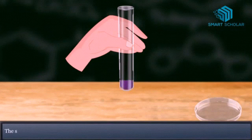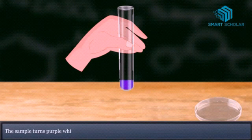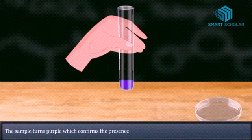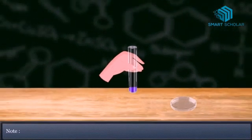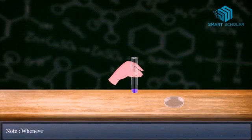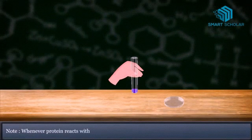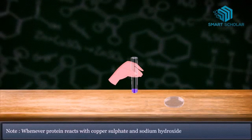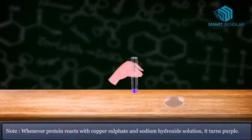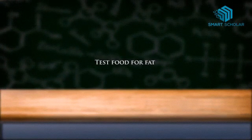The solution turns into purple color, which proves that the food sample contains protein. Whenever protein reacts with copper sulfate and sodium hydroxide solution, it turns purple. So we must remember that this indicates protein in food. Let us go with the test for fat.